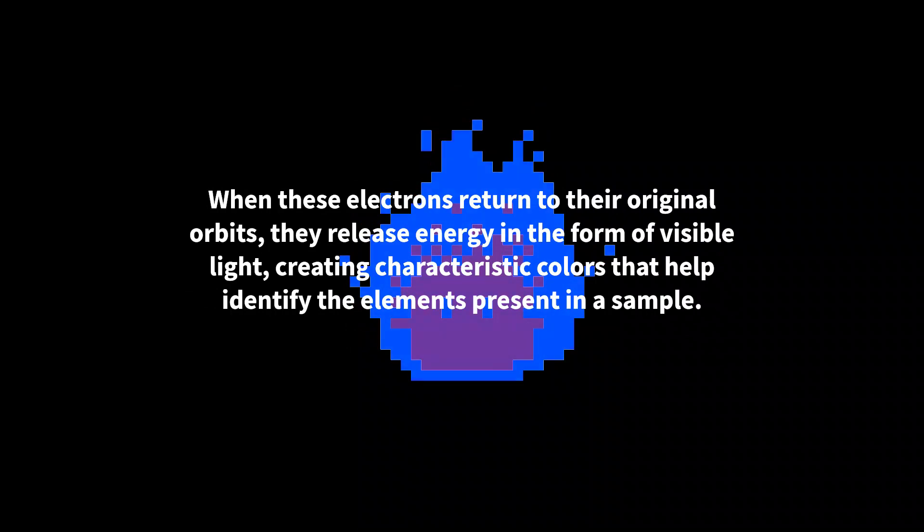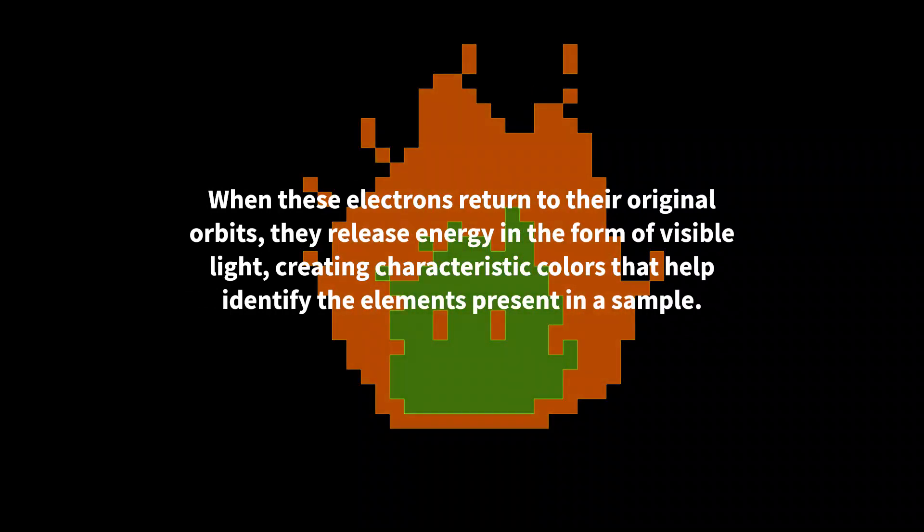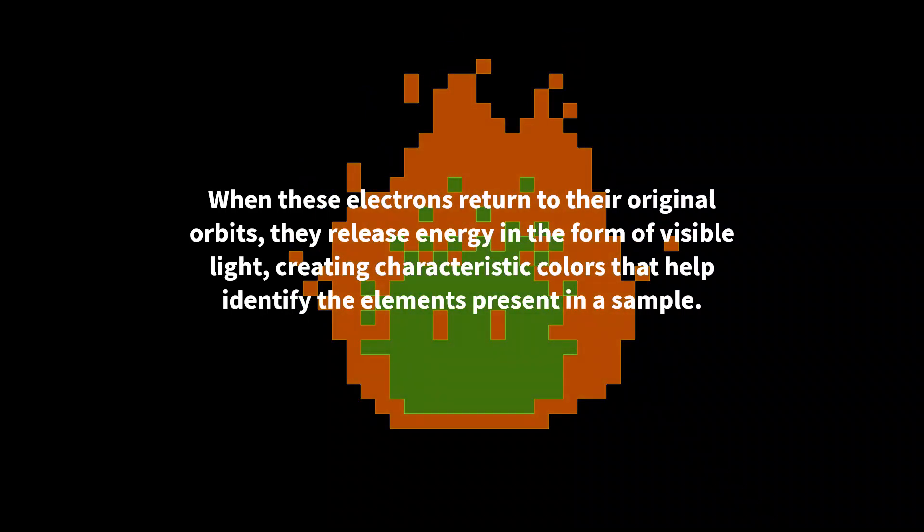When these electrons return to their original orbits, they release energy in the form of visible light, creating characteristic colors that help identify the elements present in a sample.